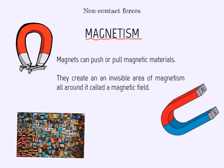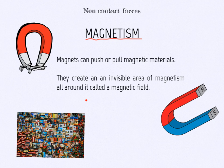Let's begin with magnetism. Magnets can push or pull magnetic materials. They create an invisible area of magnetism all around it called a magnetic field. Every metal object in the magnetic field will be attracted by the magnet.